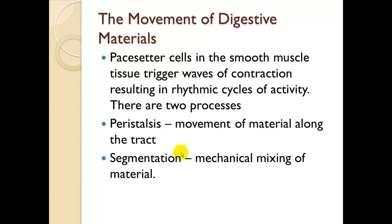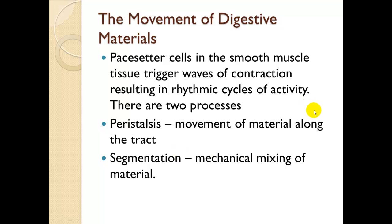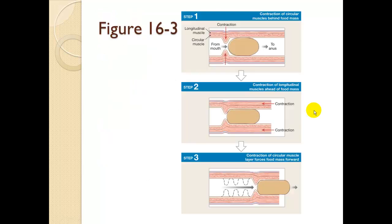The movement of digestive materials. Pacemaker cells in the smooth muscle tissue trigger waves of contraction resulting in rhythmic cycles of activity. There are two processes: peristalsis — the movement of material along the track — and segmentation — the mixing of material. The muscularis externa, with its longitudinal and circular muscle layers, contracts to segment out and propel the material.